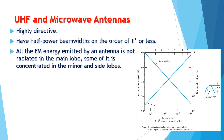Next, we have UHF and microwave antennas. Antennas used for UHF and microwave must be highly directive. Microwave antennas ordinarily have half-power beam widths on the order of one degree or less. All the electromagnetic energy emitted by an antenna is not radiated in the main lobe — some of it is concentrated in the minor lobes and side lobes.